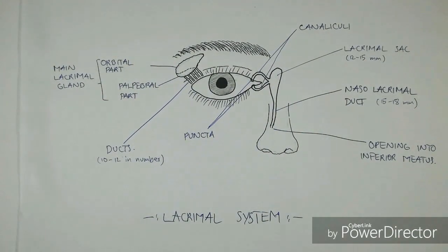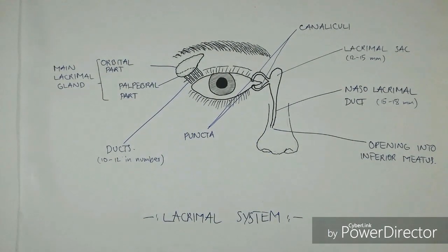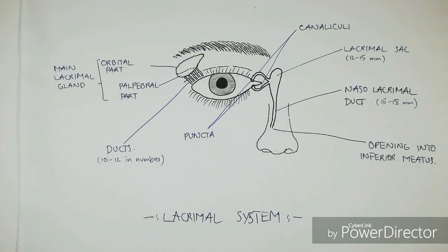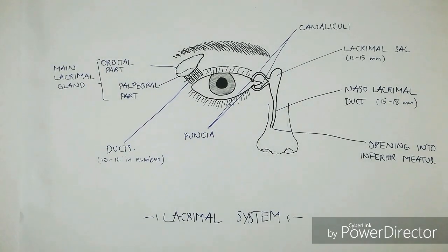Hello everyone, welcome to Med Health. Today we'll be learning about the lacrimal system of the eye and its basic anatomy. The lacrimal system of the eye consists of a secretory part and an excretory system.